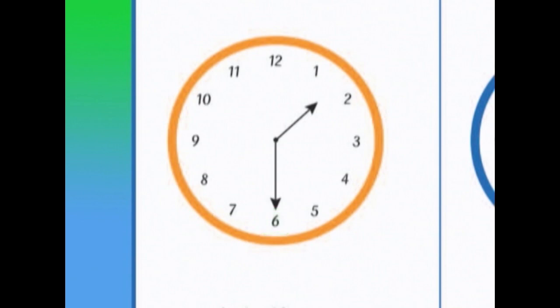So, picture number 1, clock number 1 shows half past 1. It was 1 o'clock, and it's going to be 2 o'clock, but just now it's half past 1.